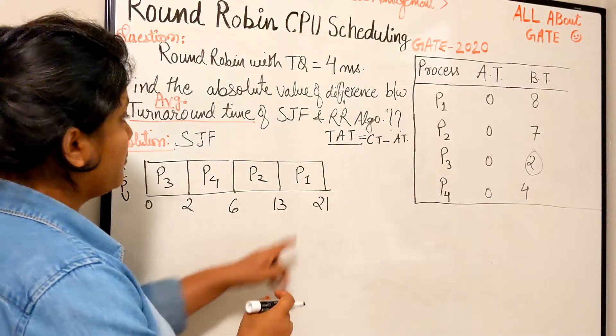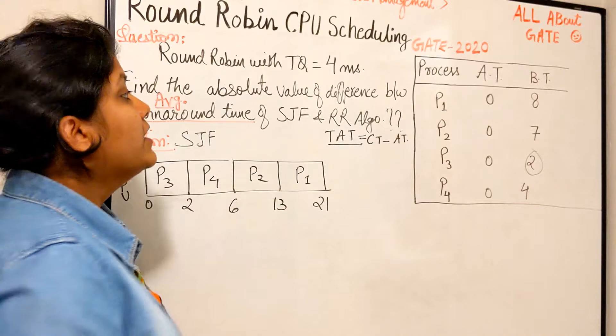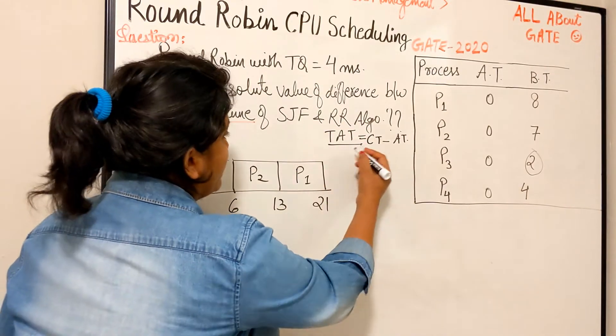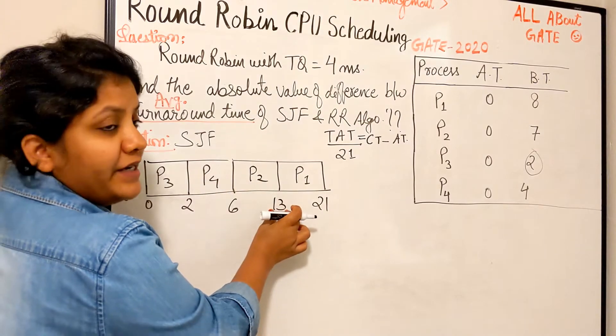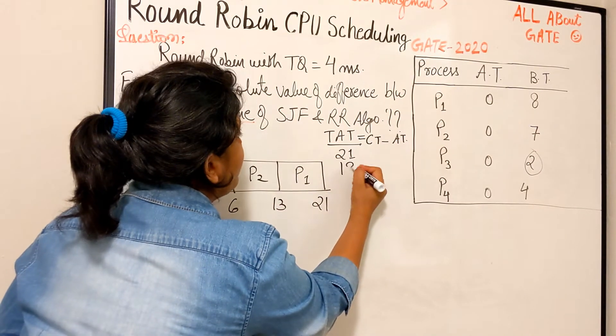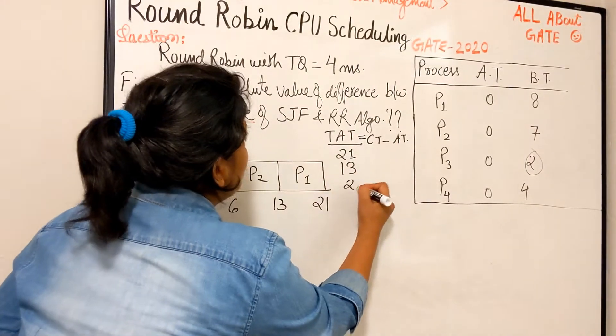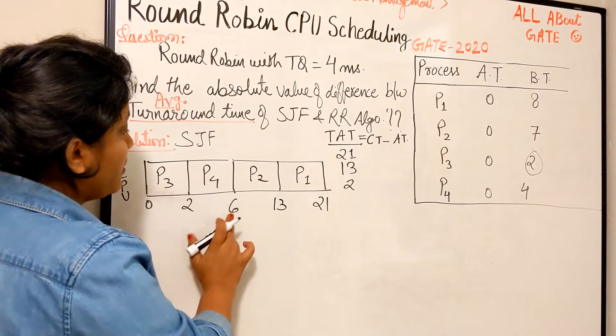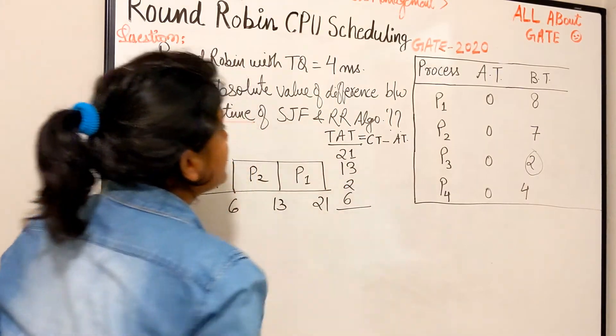The completion time for P1 is 21, arrival is 0, so 21 minus 0 equals 21. For P2, completing at 13, so 13 minus 0 equals 13. For P3, completing at 2, so 2 minus 0 equals 2. For P4, completing at 6, so 6 minus 0 equals 6. These are the turnaround times for each process.